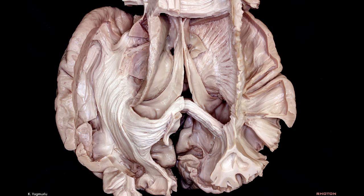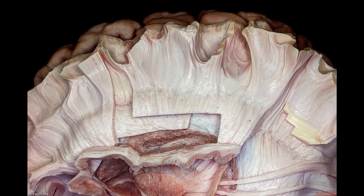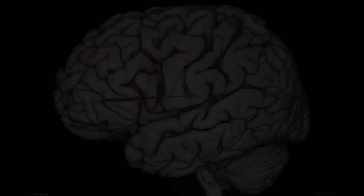After looking at the association and commissural fibre pathways, let's move on to the projection fibre pathways. The frontoparietal projection fibres, which have a vertical direction, can be called the corona radiata, and the occipital projection fibres, which have a horizontal direction, can be called the sagittal stratum. The corona radiata is formed by the external and internal capsules above the upper level of the putamen. The centrum semiovale is located above the level of the corpus callosum and consists of the superior longitudinal fasciculus association fibres, corona radiata projection fibres, and callosal commissural fibres.